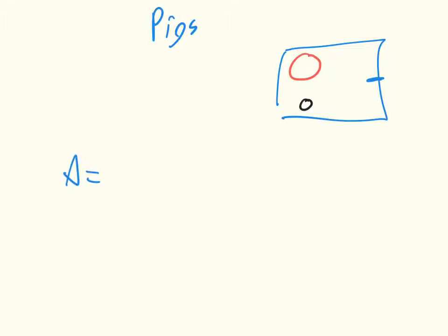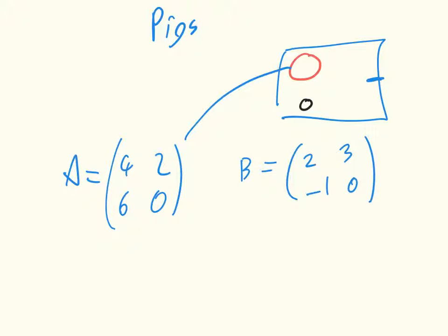We have for the dominant pig 4, 2, 6, 0 - those are the utilities to the dominant pig. And then we have utilities for the subservient pig of 2, 3, minus 1, and 0. Our strategy sets are the same for both players, and they are simply to push lever or not.